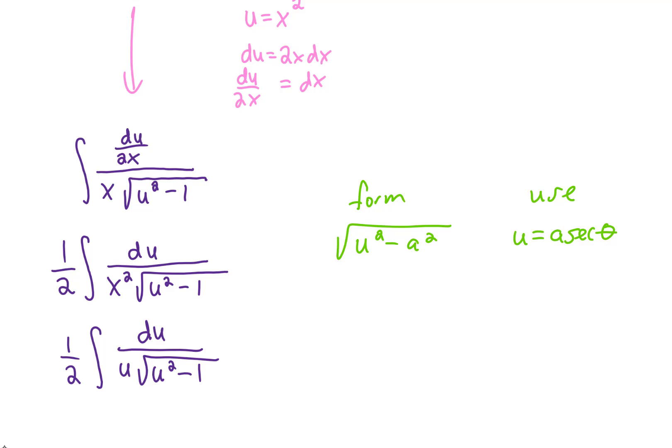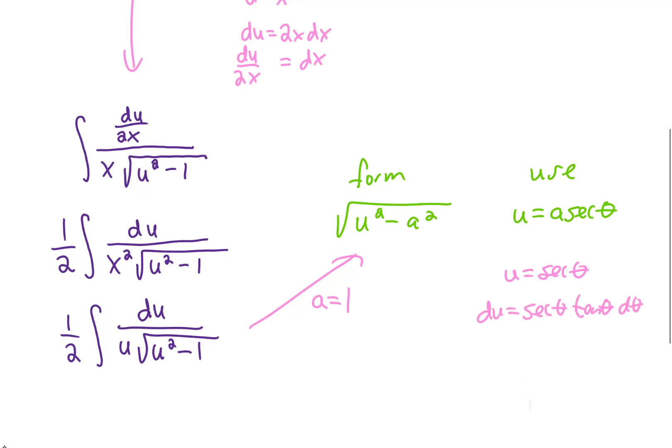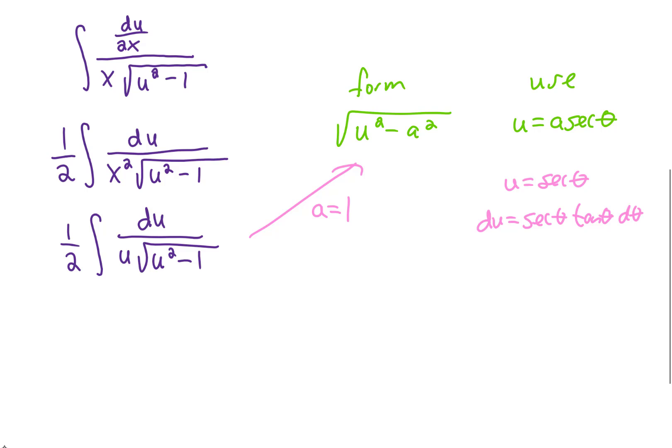Now looking back at our list of forms for trig substitutions and making a very small edit, we notice that what we have here is this form with a equals 1. So we're going to make the substitution u equals secant theta. Taking a derivative of that then gives us secant tangent. Let's make all of those substitutions and see what integral we end up with.